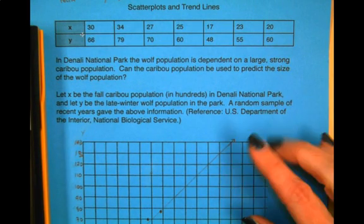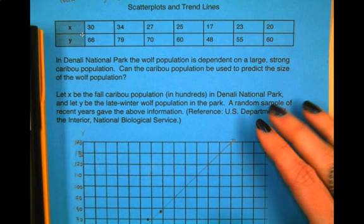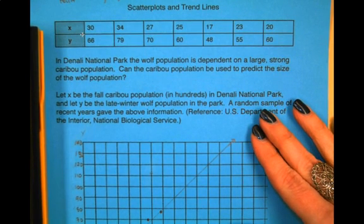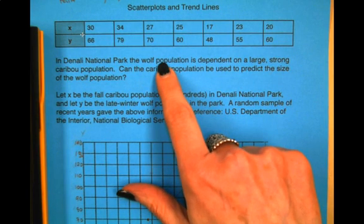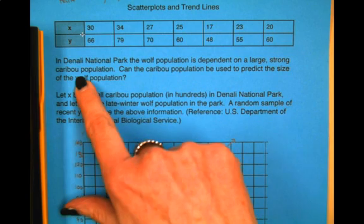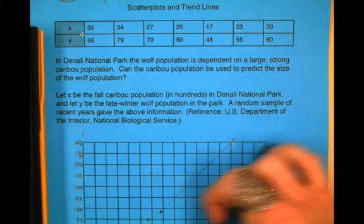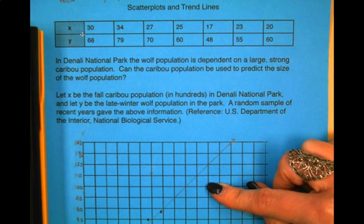Okay, we are back with our scatter plots and trend lines. As you can see, we are still working with the scatter plot about the wolf population in Denali National Park based on the caribou population. In class, we have been working on making scatter plots by hand, and what we'd like to do now is look at the process for doing that on the calculator.